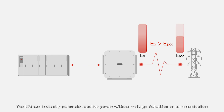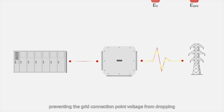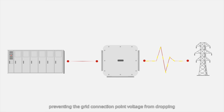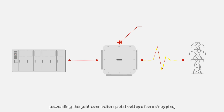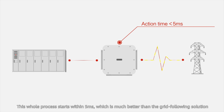The ESS can instantly generate reactive power without voltage detection or communication, preventing the grid connection point voltage from dropping. This whole process starts within 5 milliseconds, which is much better than the grid-following solution.